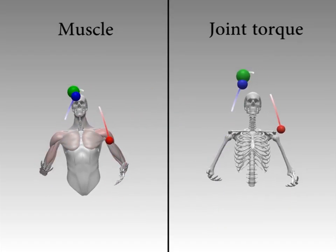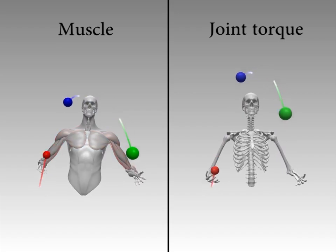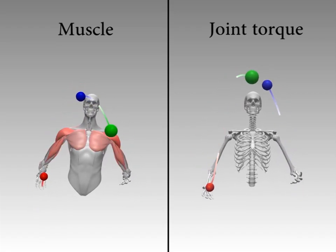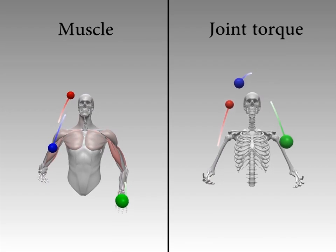This side-by-side comparison shows that torque actuators react uniformly regardless of the loading mass, while muscle actuators respond in a convincing manner.